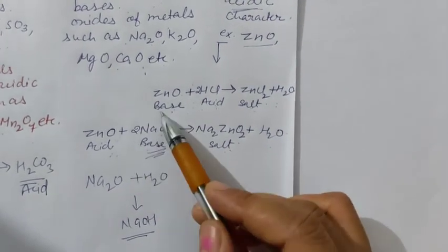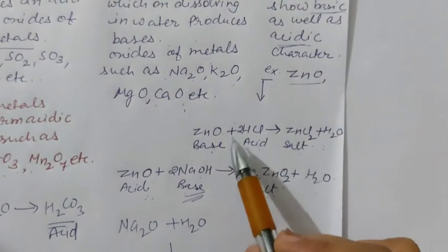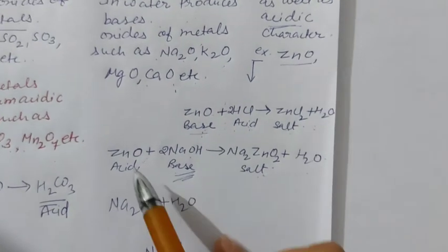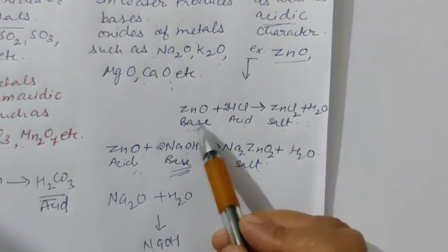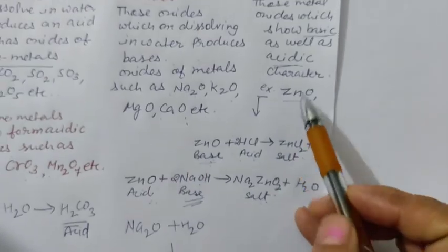In two reactions in different two cases, in one case zinc oxide reacts as a base and in the other case it behaves like an acid. So it is an example of amphoteric oxides.